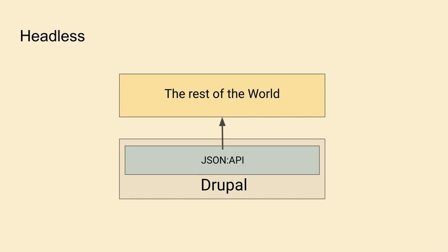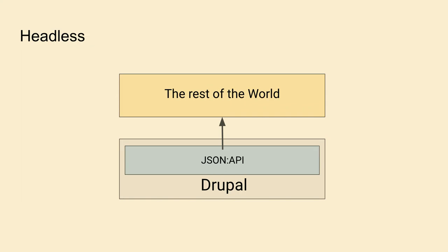Headless is when you have the Drupal application with JSON API providing content to the rest of the world — you don't care about the front end really. So in decoupled you build the back end and the content together, whereas in headless you build the back end and then anyone can use your content: it can be an Astro.js app, an Alexa app, or anything else.